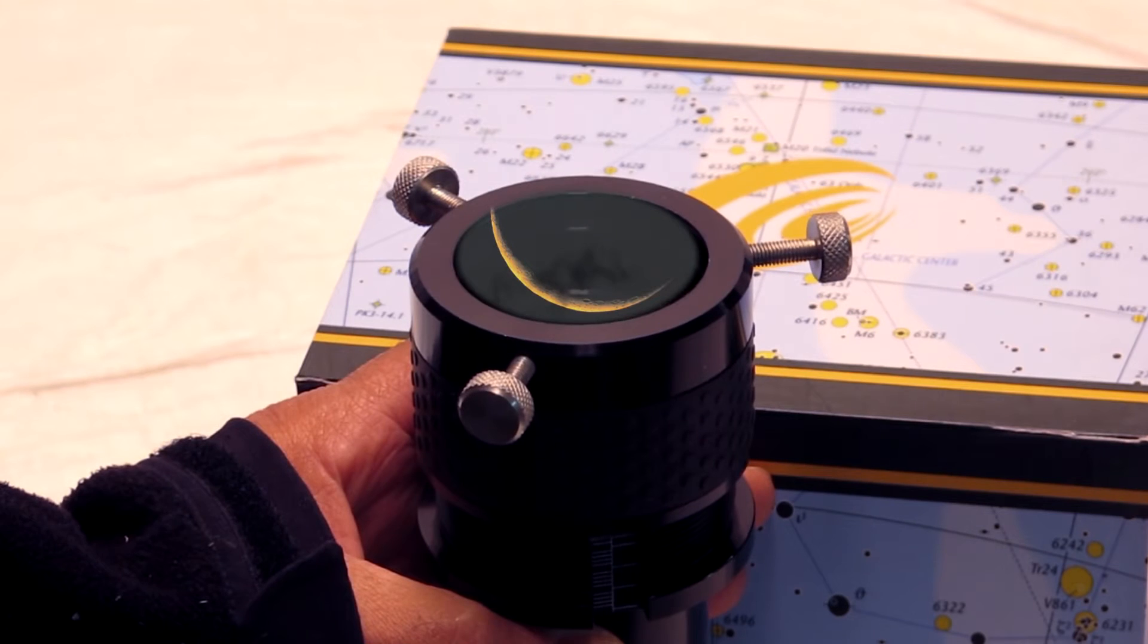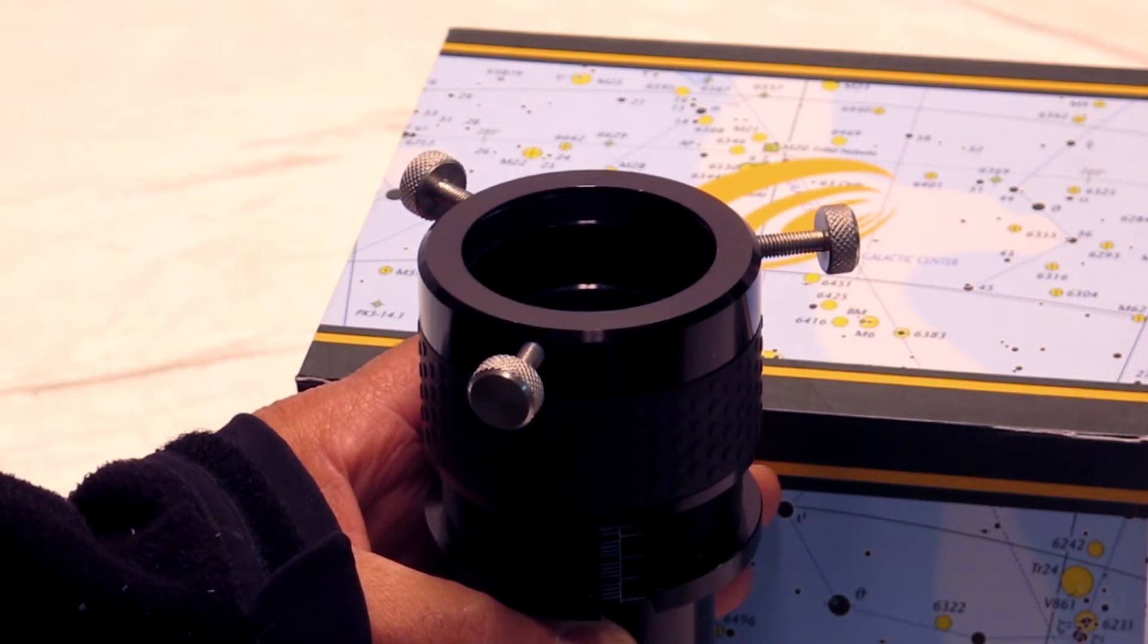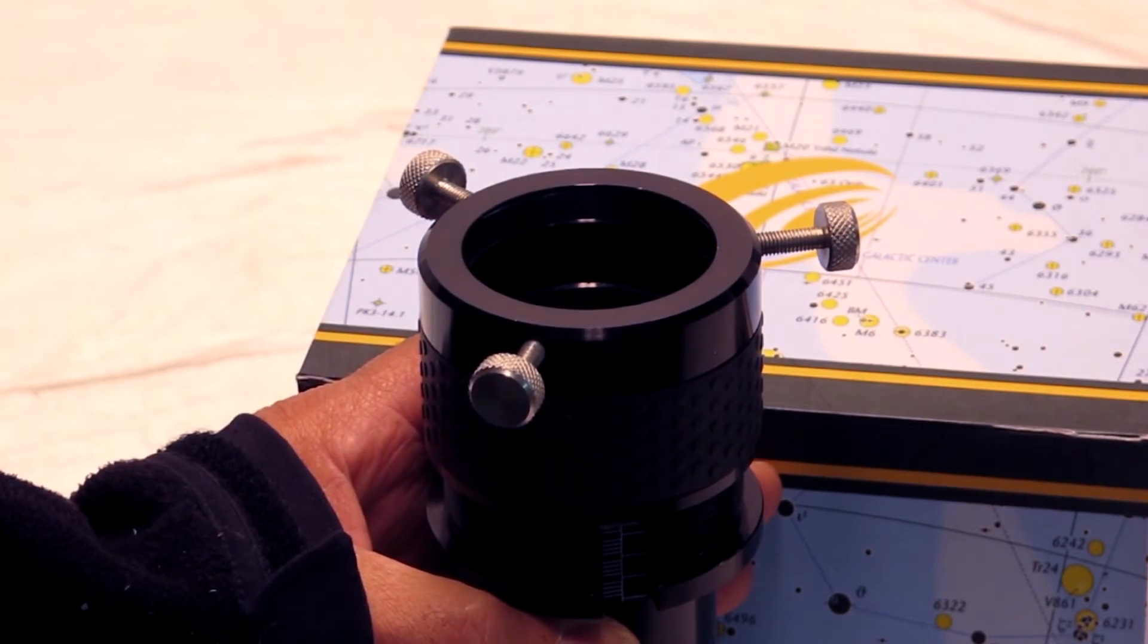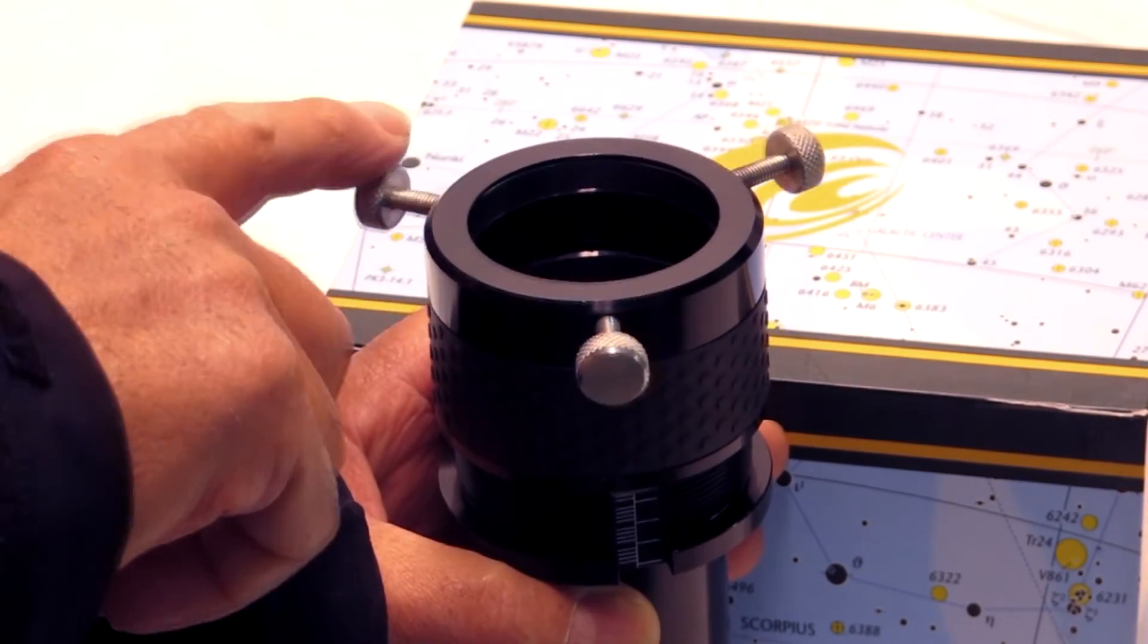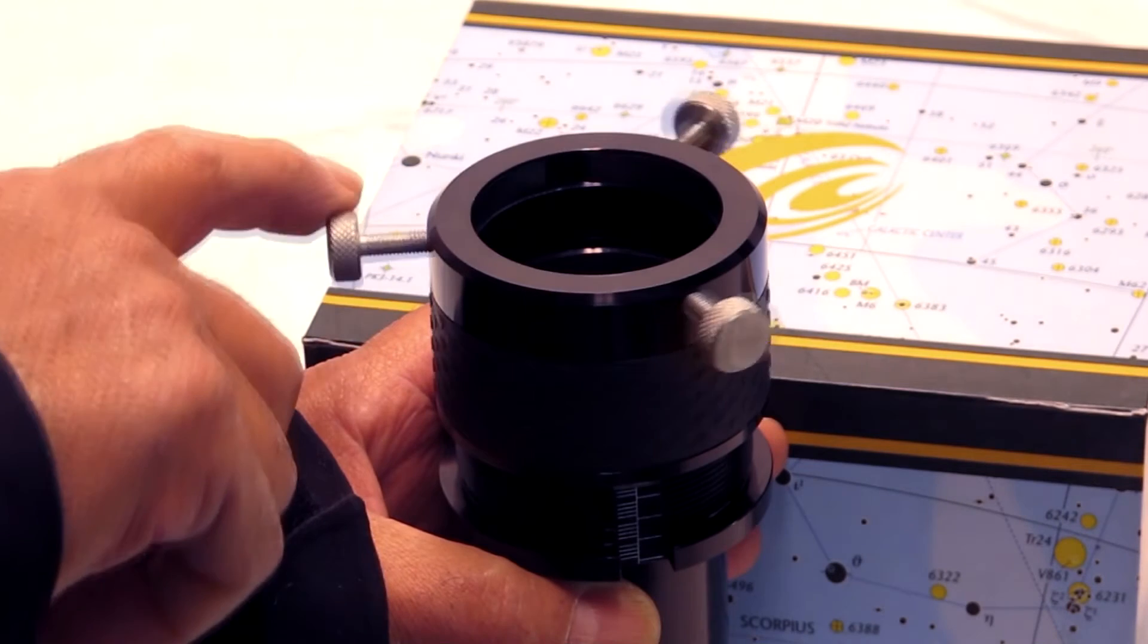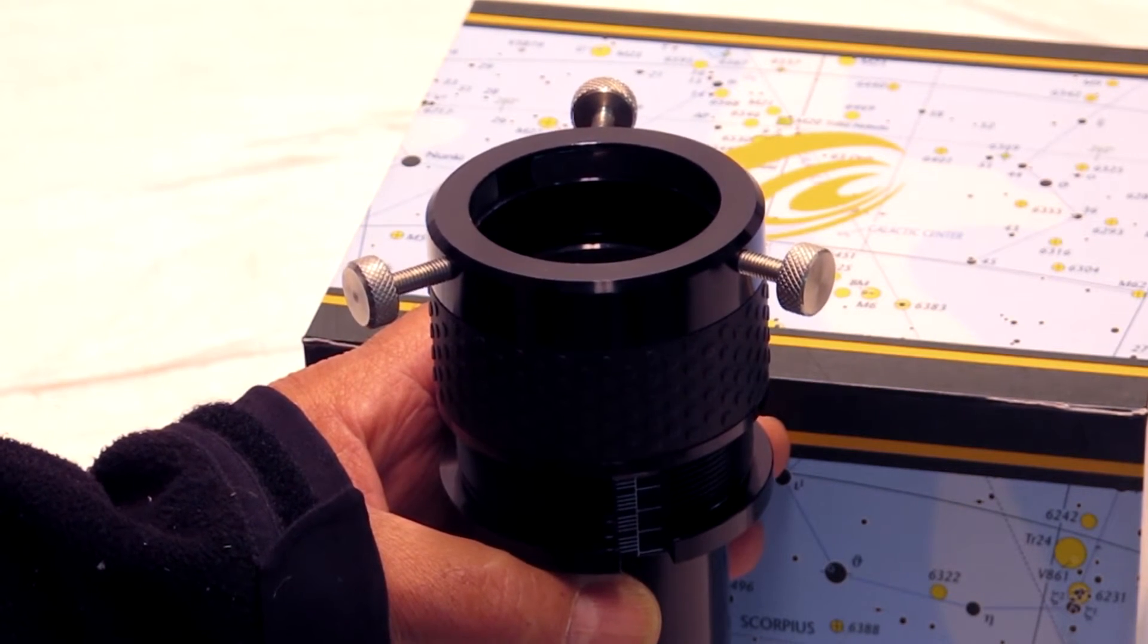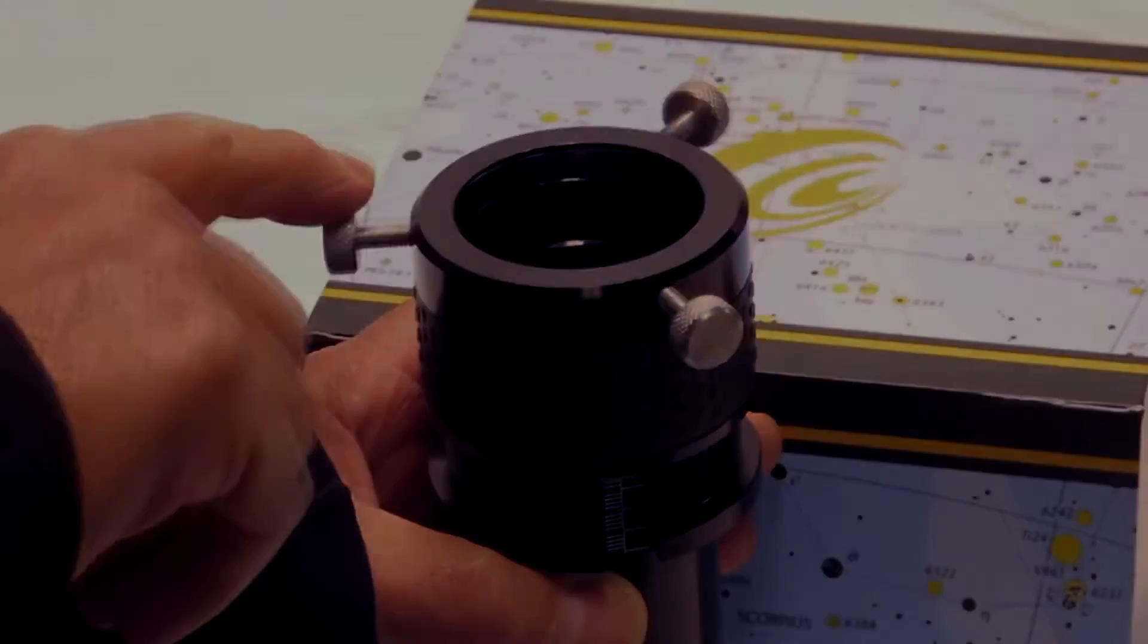Once you achieve that focus, you lock down your focuser. Then you put your eyepiece inside the coma corrector, and you adjust this either in or out until you eliminate the coma or get it as best as you can. And you can tweak the focuser a little bit on your telescope, but most of it needs to come from focusing here.